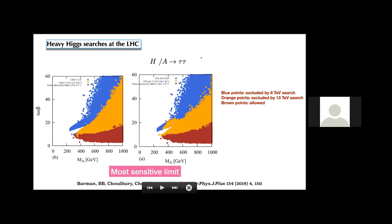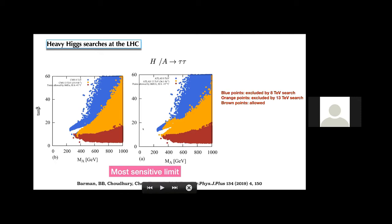For moderate TeV-level Higgs masses, this analysis can rule out high tan β. Blue points are ruled out by CMS or ATLAS 8 TeV results. Applying 35–36 fb⁻¹ results from CMS or ATLAS, the brown points are allowed and the orange points are excluded by the b-associated Higgs production decaying to ττ analysis. If we restrict heavy scalars below 1 TeV, the only allowed region is around tan β < 10.